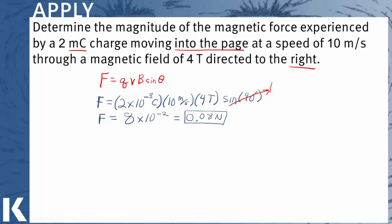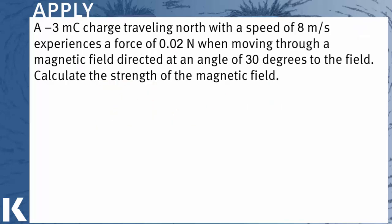Here's another example, this time solving for the strength of the magnetic field B. We're given a negative 3 millicoulomb charge traveling north with a speed of 8 meters per second. Experience a force of 0.02 newtons moving through a magnetic field at an angle of 30 degrees.